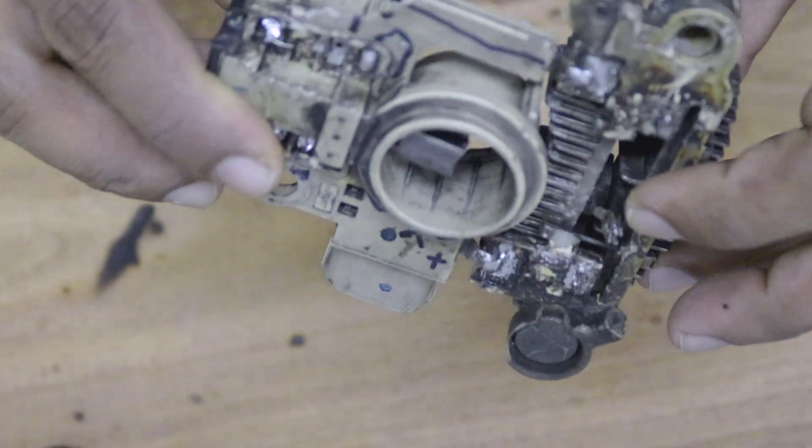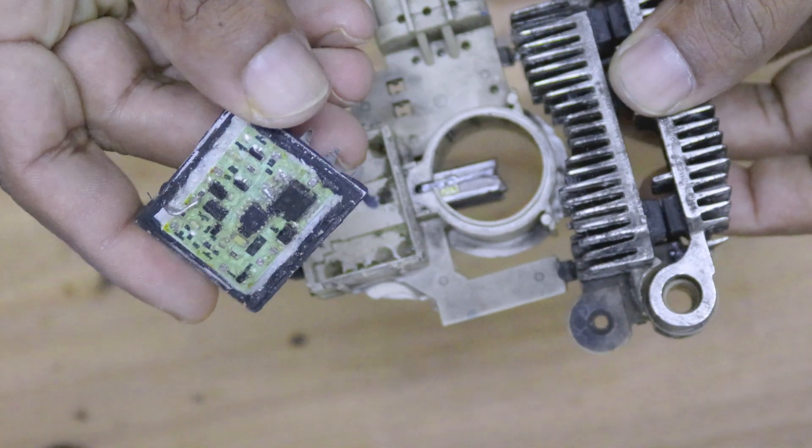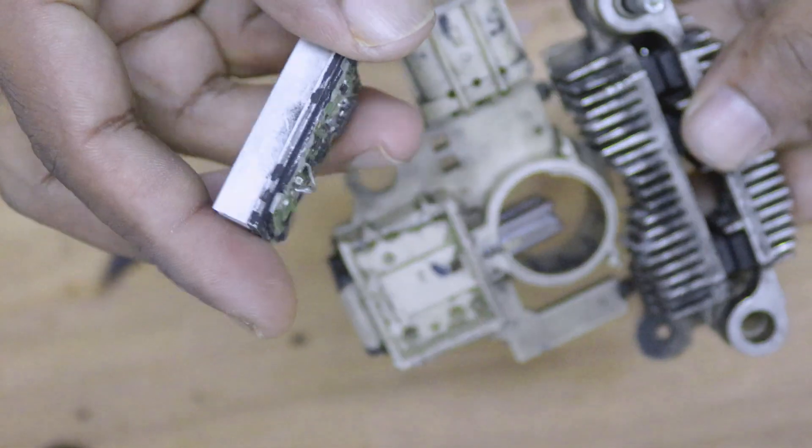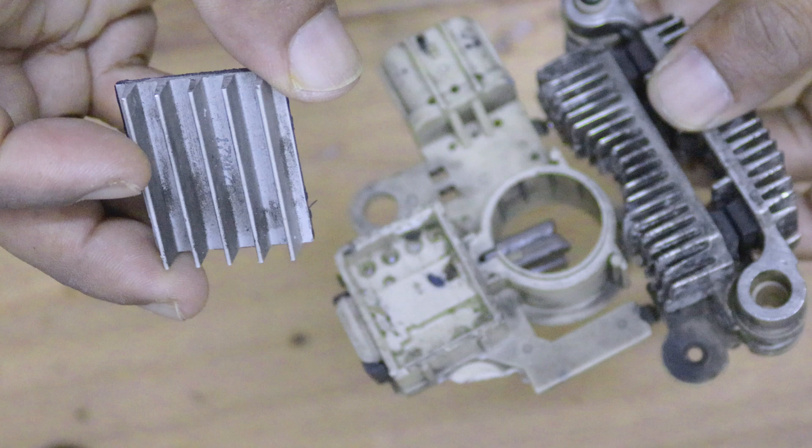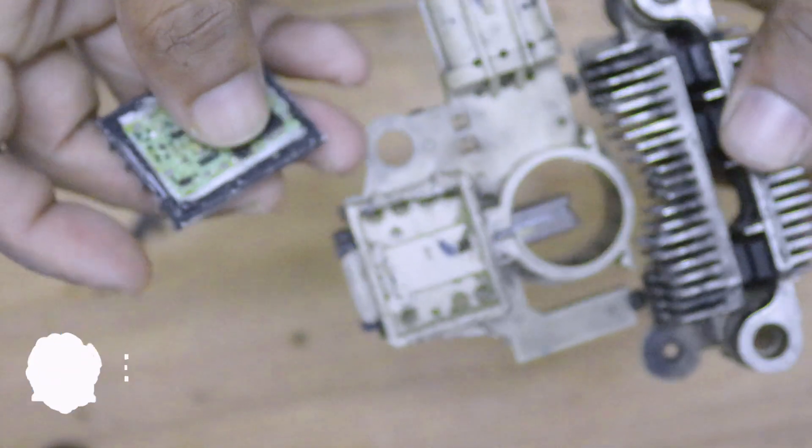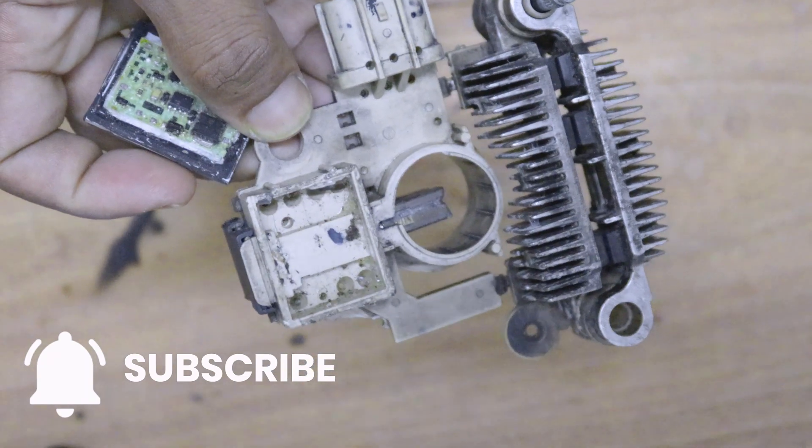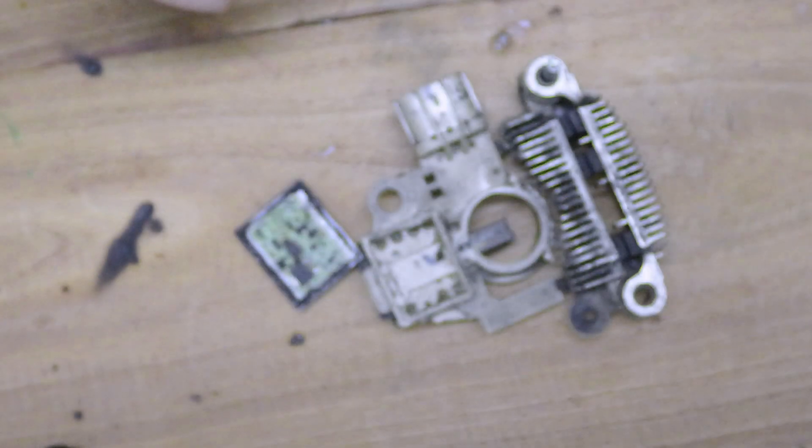This is a regulator for a 90 ampere car alternator. Often, the integrated circuit, IC, inside it is the first component to fail. But don't rush to buy a new regulator just yet. In this video, we'll explore the best solution to fix it and save you money. So, subscribe to SetonFix and stay tuned for more practical tips.